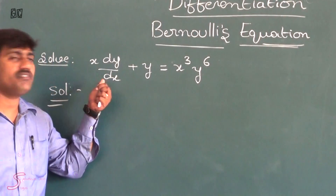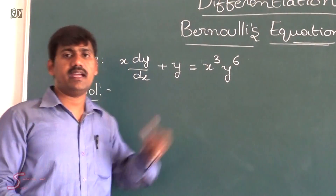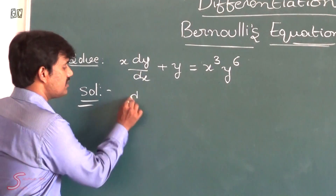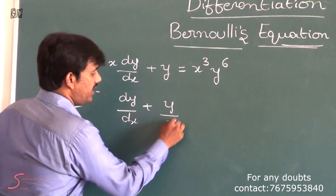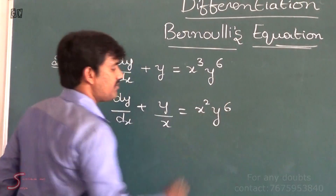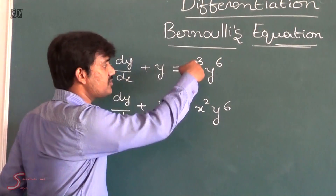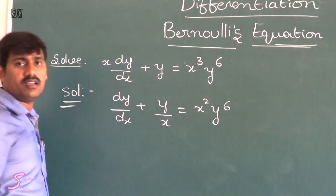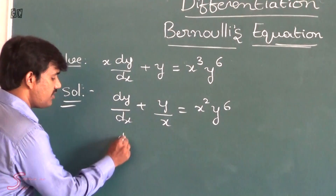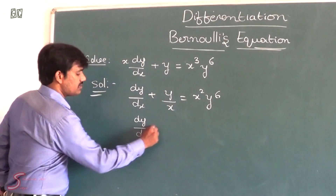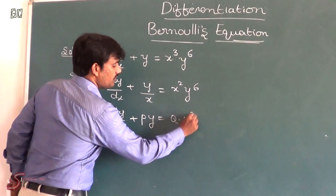The coefficient of dy/dx should be 1. Dividing the entire equation by x gives dy/dx + y/x = x² · y⁶. This is in the form of Bernoulli's equation: dy/dx + p·y = q · yⁿ.